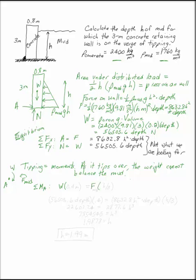F from the mud and the weight of the concrete. The weight of the concrete acts halfway through the distance, which is 0.4 meters. The weight of the force from the mud acts at H over 3. The centroid of a triangle, remember, is a third of the way from the big end. These are the two things I want to have balance.